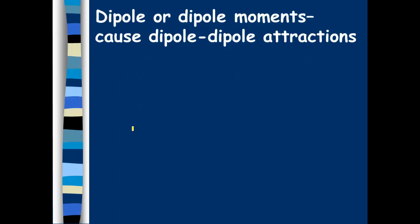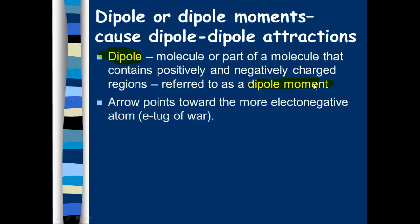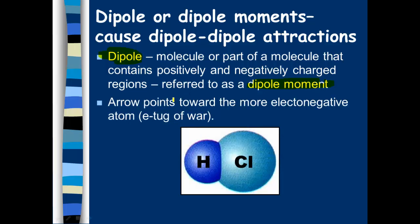Now, dipole or dipole moments will cause dipole-dipole attraction. So first of all, let's define a dipole. A dipole is going to be a molecule or part of a molecule that contains a positively and a negatively charged region. And if this happens, we refer to it as what's called a dipole moment. Now, how do we know if this is going to take place? We've seen this concept before because we've talked about this really happens a lot of times if you have a polar covalent bond.